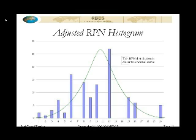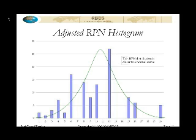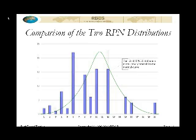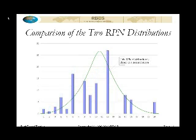We fixed that by changing the definitions of what ratings two and three mean from an impact point of view. You can see the precise definitions and the changes made in the risk-based testing article on the website. This is now the adjusted risk priority number histogram based on the re-evaluation, and as you can see, it is closer to a normal curve. It was a pretty simple fix: change the definitions, go through the twos and see if they'd actually fall into the three category, and reconfirm with the stakeholders that those changes were okay. That solved the problem.